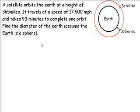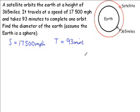Firstly, the height of the satellite is 365 miles above the earth's surface, which means that in our diagram this distance here is 365 miles. We're told that the speed of the satellite is 17,500 miles per hour and we're also told that it takes 93 minutes to complete one orbit, so the time is 93 minutes.